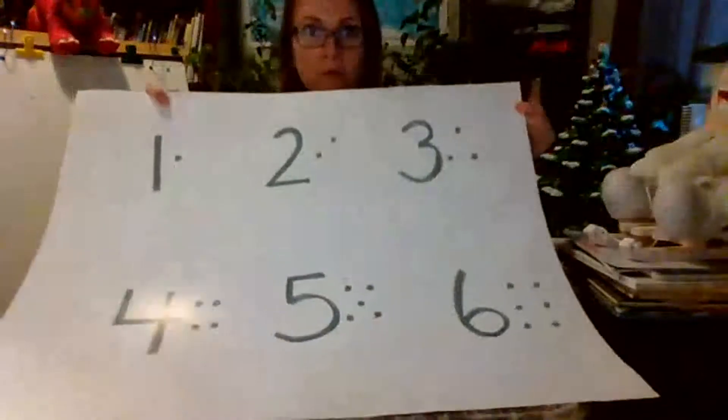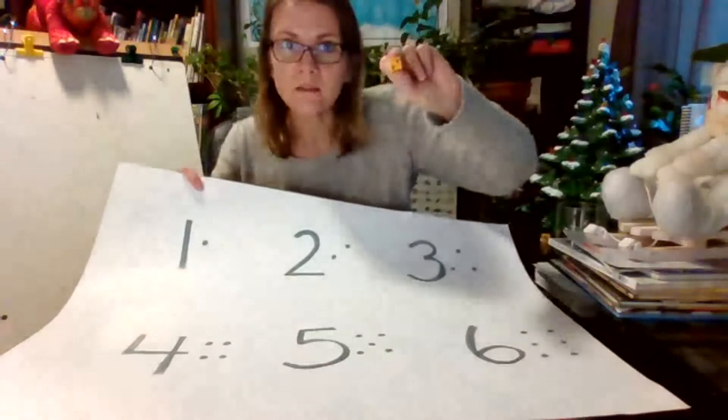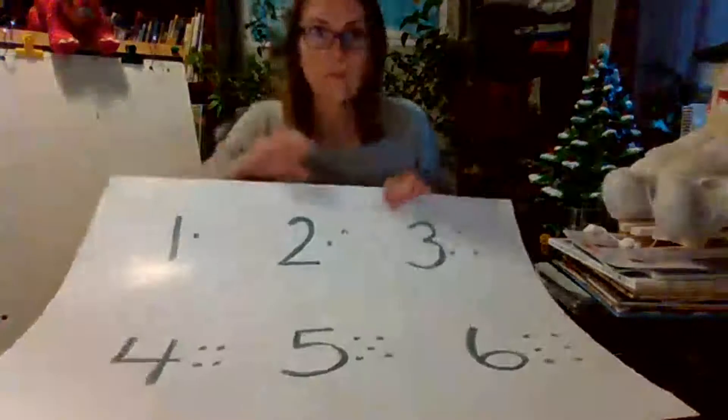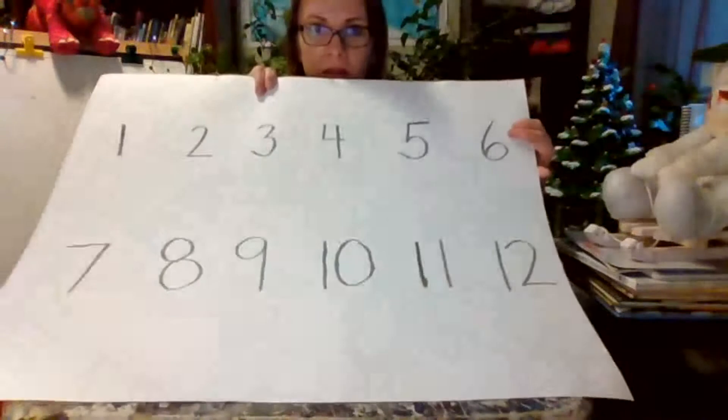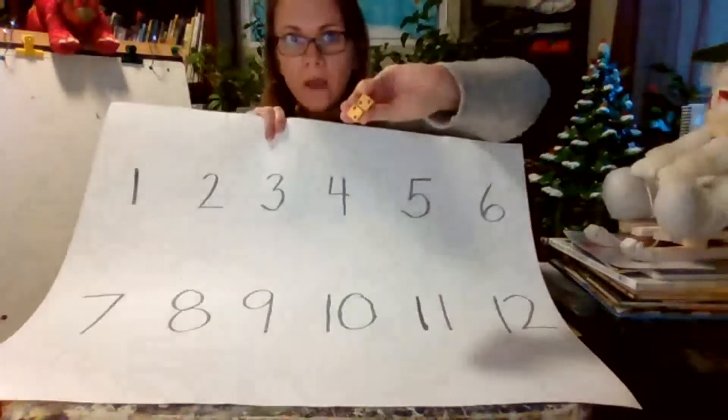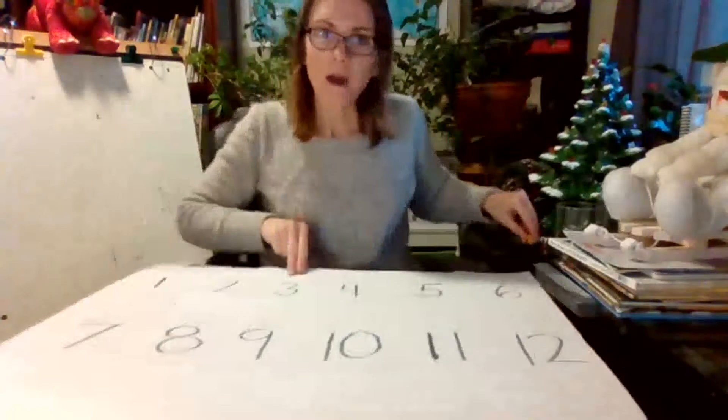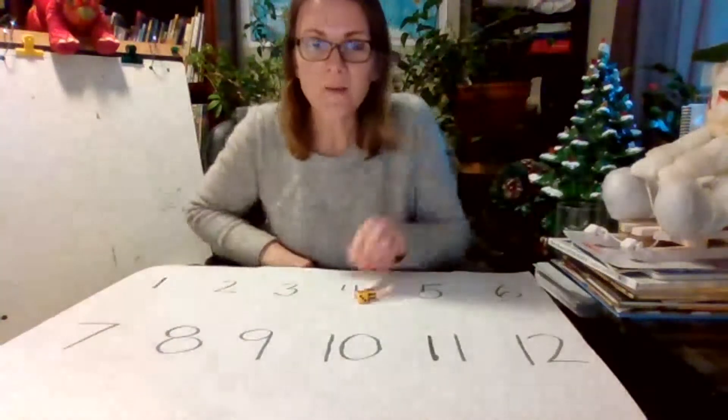So some of you will be ready for numbers one to six, and you just use one dice for that. Some of you will be ready for a little bit of adding to do numbers one to twelve, and for that one you can use two dice.